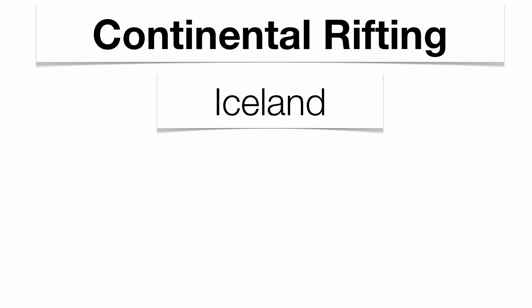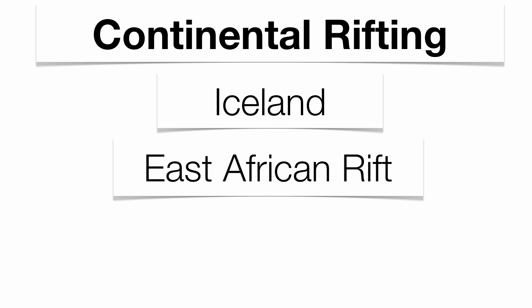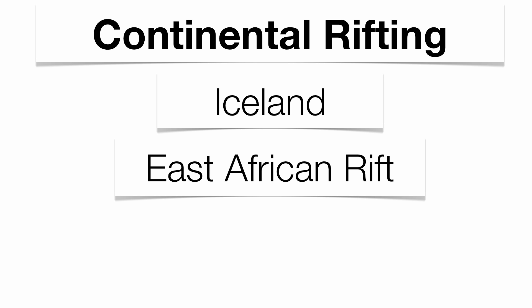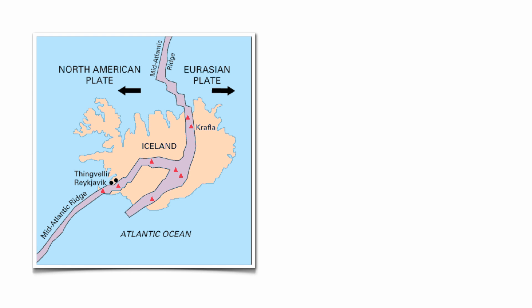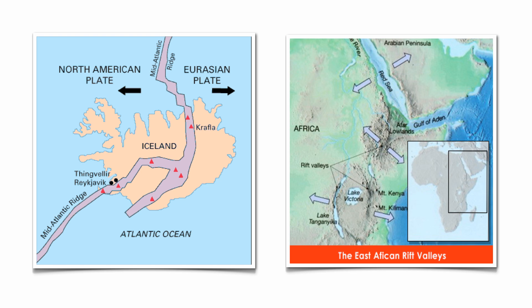Continental rifting. There are two locations where the continents are splitting. One is Iceland, and one is the East African Rift — two locations at the surface where divergence is actually taking place. Part of Iceland is on the North American plate traveling west, and part is on the Eurasian plate traveling east, with a big crack right in the middle. So every time the mid-Atlantic ridge splits, Iceland tends to get a little bigger, gets bigger earthquakes, and volcanic eruptions. In the East African Rift, the Arabian Peninsula is moving in a northeast direction away from Africa, and a big chunk of eastern Africa is moving to the east. It's very important to understand where those two divergence zones take place on the continents.